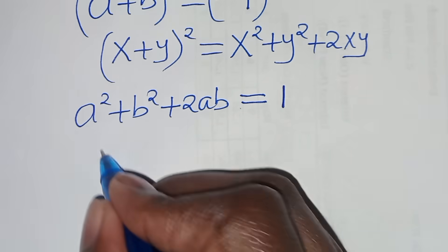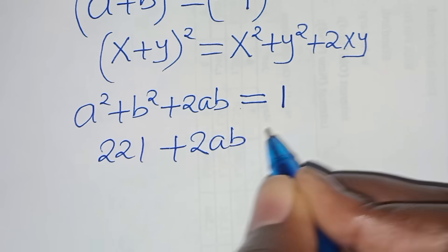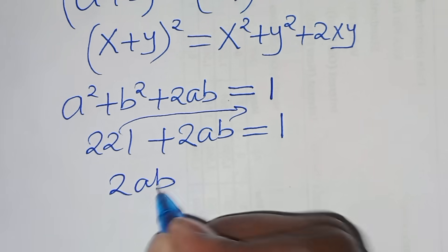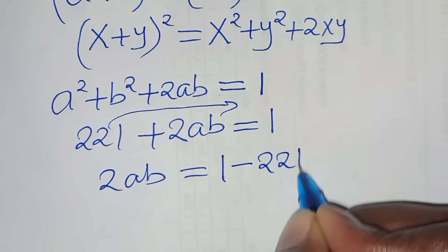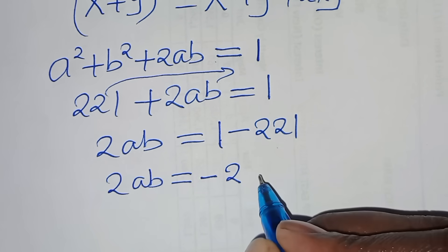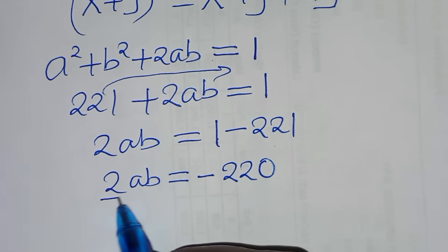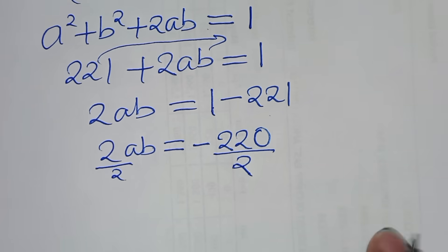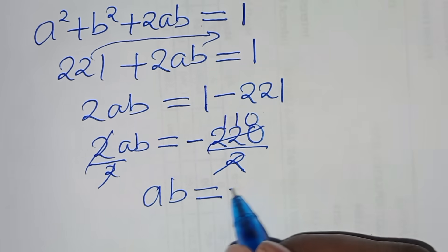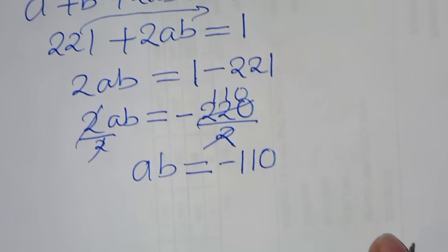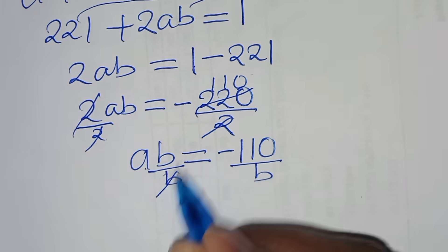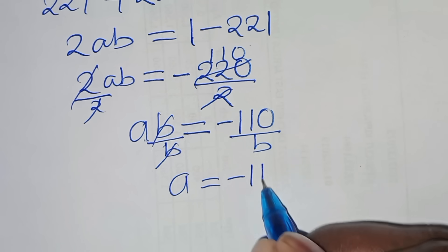Substituting, 221 plus 2ab equals 1, so 2ab equals 1 minus 221, which is minus 220. Dividing by 2, we get ab equals minus 110. Making a the subject, a equals minus 110 over b.